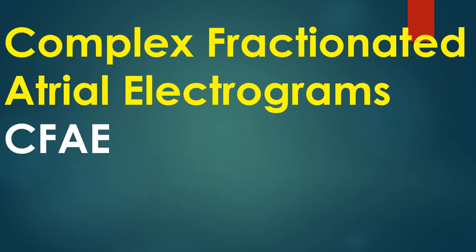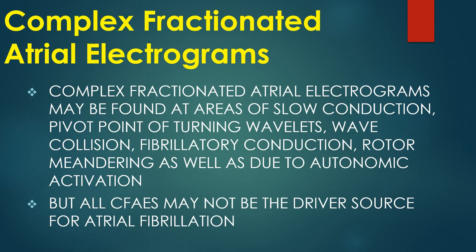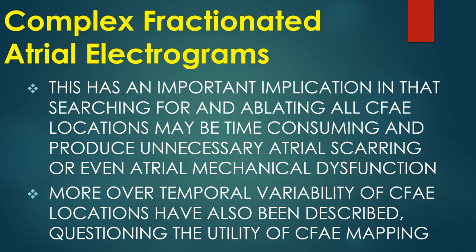Complex fractionated atrial electrograms (CFAEs) were offered as a tool for substrate mapping and ablation in atrial fibrillation by Nademanee and colleagues in 2004. There is a lack of consensus on the definition of CFAE and its definite role in ablation. CFAEs may be found at areas of slow conduction, pivot points of turning wavelets, wave collision, fibrillary conduction, rotor meandering, and due to autonomic activation. However, not all CFAEs are driver sources for AF — searching for and ablating all CFAE locations may be time-consuming, produce unnecessary atrial scarring, or even cause atrial mechanical dysfunction.